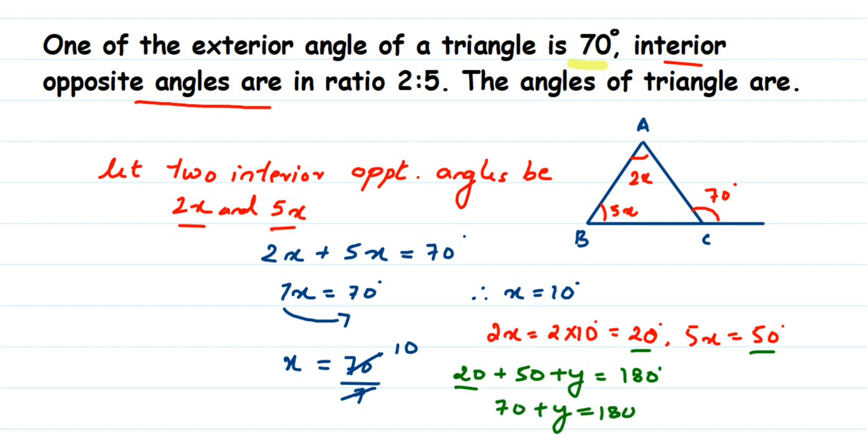We are going to transpose 70 to the other side. So y will become, so y is equal to 180 minus 70, which is 110 degrees. So y is equal to 110 degrees.